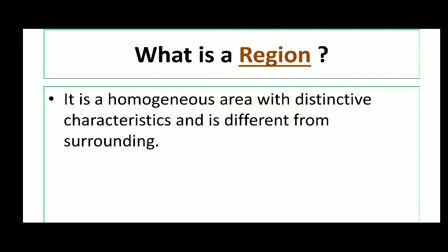Homogeneity is one of the reasons that defines a region. In place A, the people speak German language, so German language is a homogeneity. You may go to each and every nook and corner of that region, you will find that each and every person is speaking German language only. No other language is being spoken in that particular region. If you examine that particular region with its surroundings, you will find that the characteristics of the surrounding are completely different from that region. So we can easily say that a particular region is a homogeneous area with distinctive characteristics and it is completely different from its surroundings.